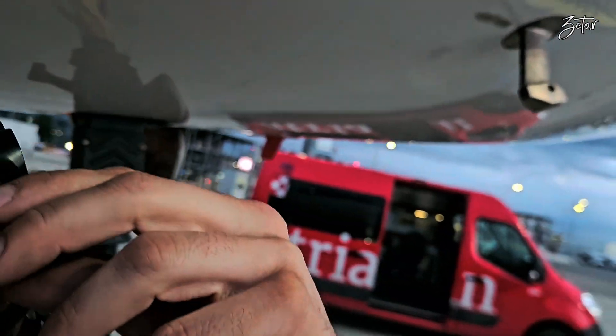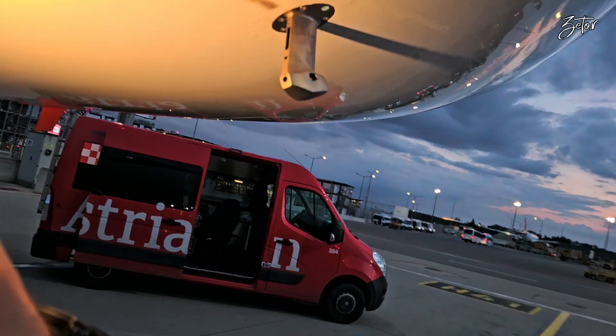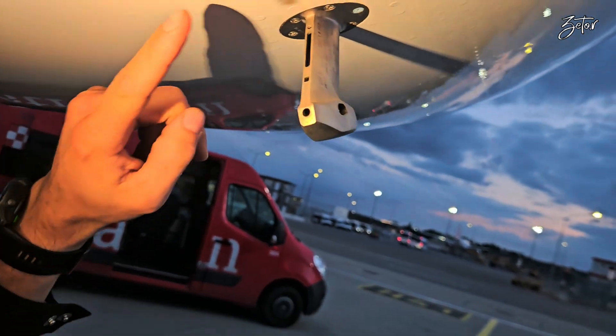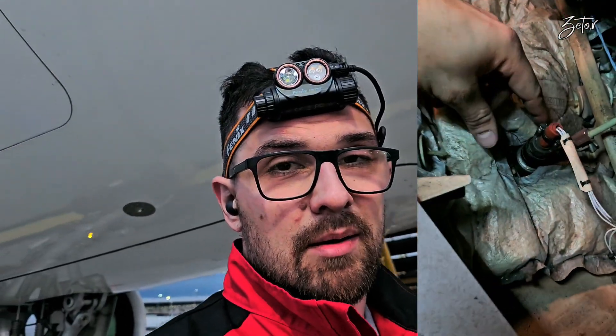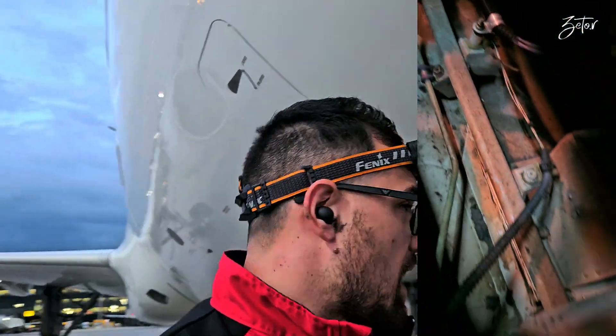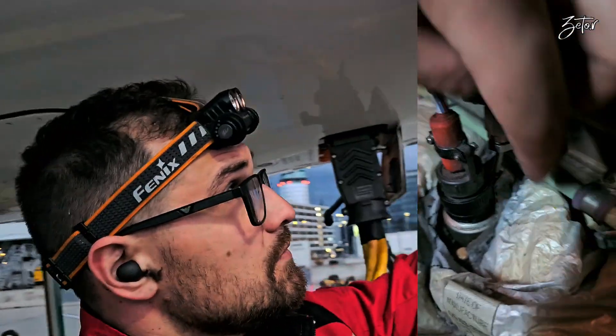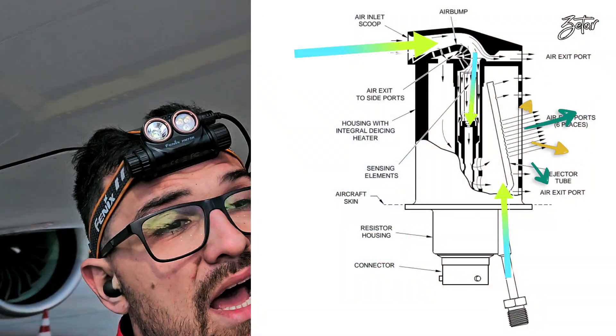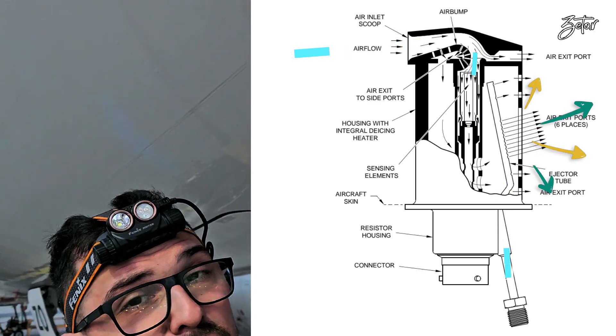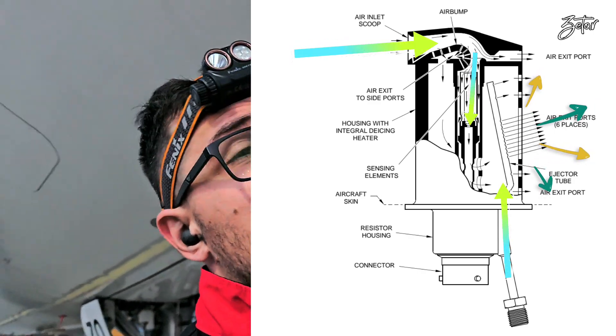That's why some Airbuses have a special feature — they have aspirated total air temperature sensors. You can see this pipe inside here. Whenever there is a bleed source, like APU, high pressure ground connection, or engine bleed activated, air flows through this pipe and is sprayed out, which creates low pressure inside. This provides enough force to draw air into the scope, through the choke, and around the element, which provides accuracy on the ground.